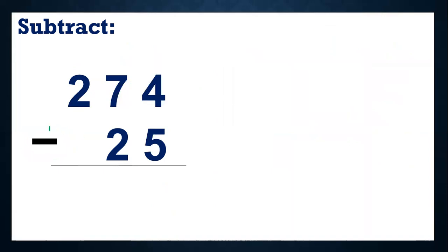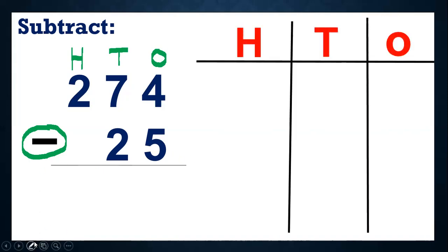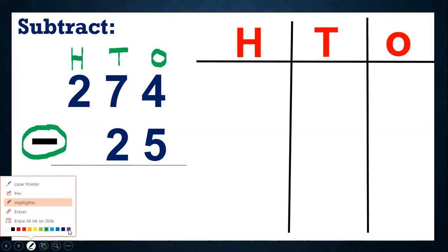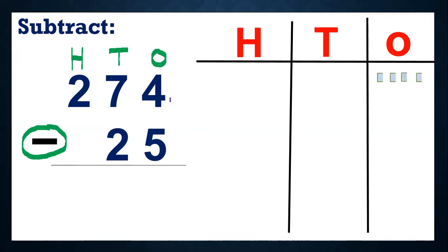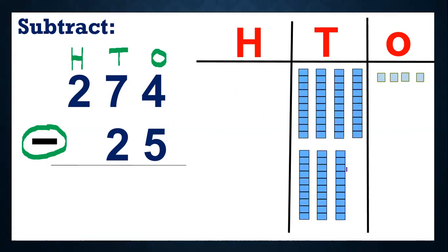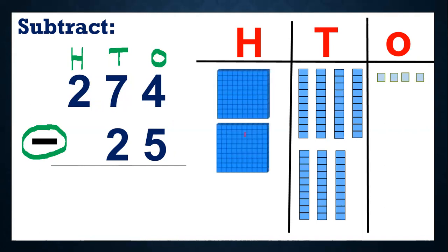So what is the first thing we'll see? We'll see the sign. So here we have minus, so we know that we will be doing subtraction. Next, we need to know which number is in which place, so I'll write ones, tens, and hundreds. So first we will start from ones. We will do this with the help of blocks — ones, tens, and hundreds. So how many ones do we have here? Four ones. So four blocks of ones and seven tens, so seven blocks of tens, and two hundreds, so two blocks of hundred.